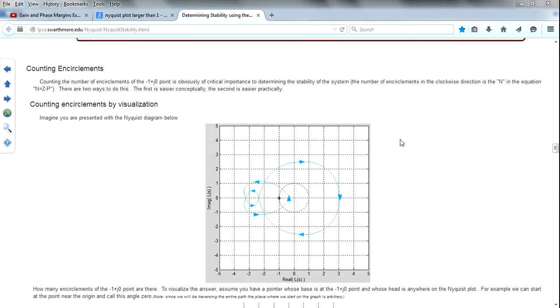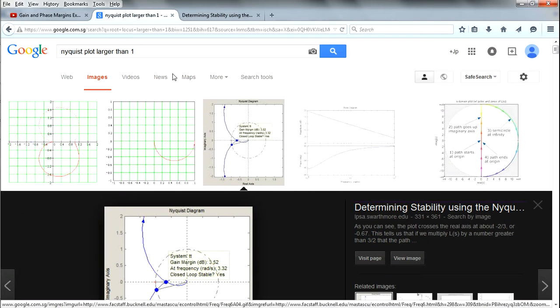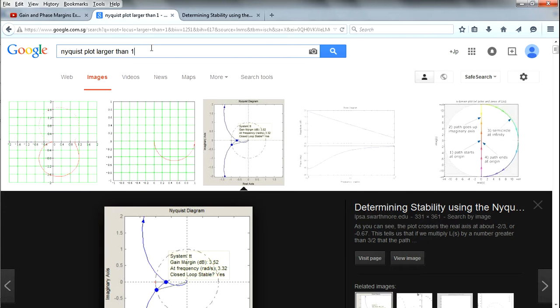If I go to continue my gain and phase, I would like to let you know the counting encirclements thing. If you remember the Nyquist stability one, there is this page - if you were to type in Nyquist plot larger than 1...